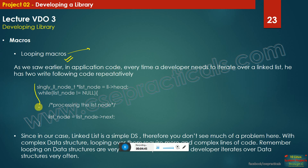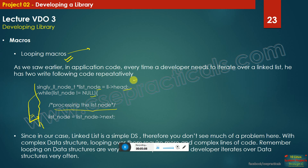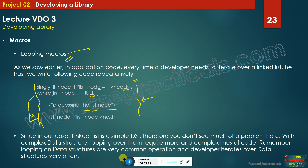Looping macros are used to iterate over data structures. In our case we are using a linked list, and if you want to iterate over it, the most probable code you would write is: take a variable pointing to the head of the linked list and iterate until you encounter null, processing each node. Since a linked list is a fairly simple data structure, you can afford to write this code again and again whenever you want to iterate in your application.